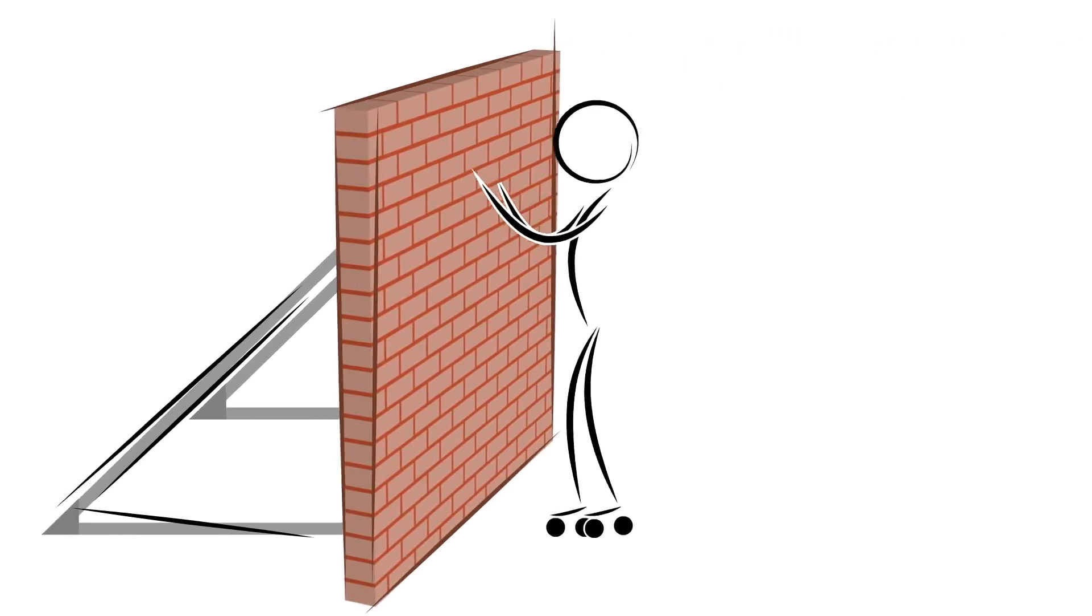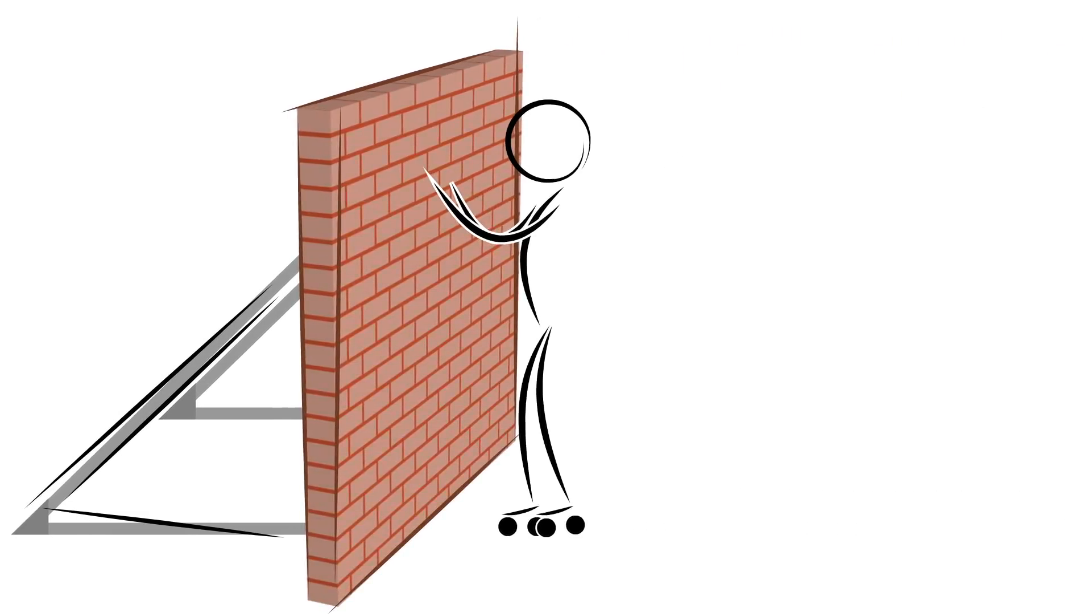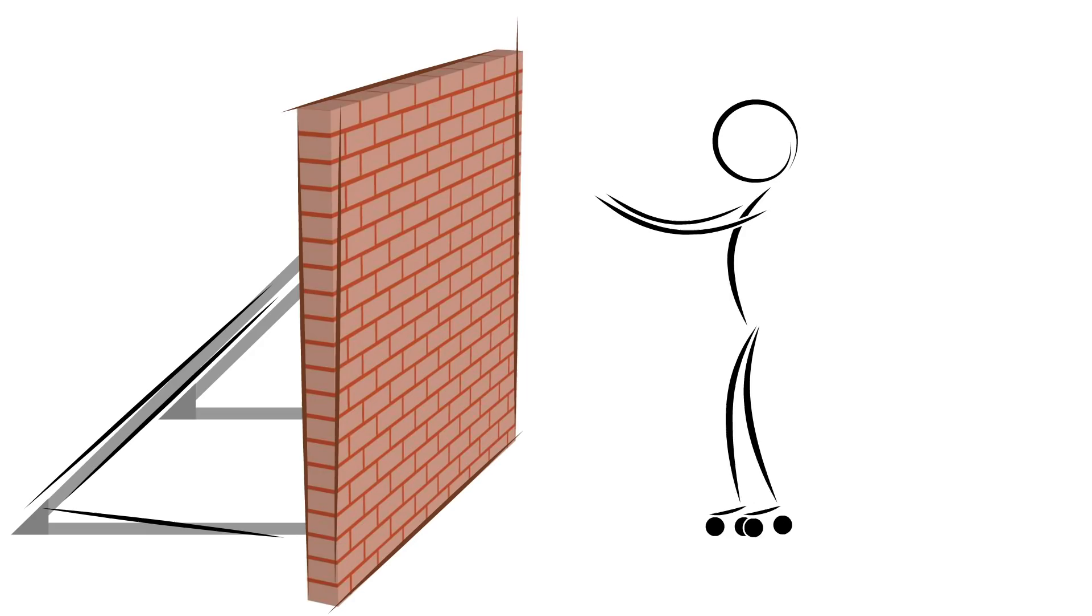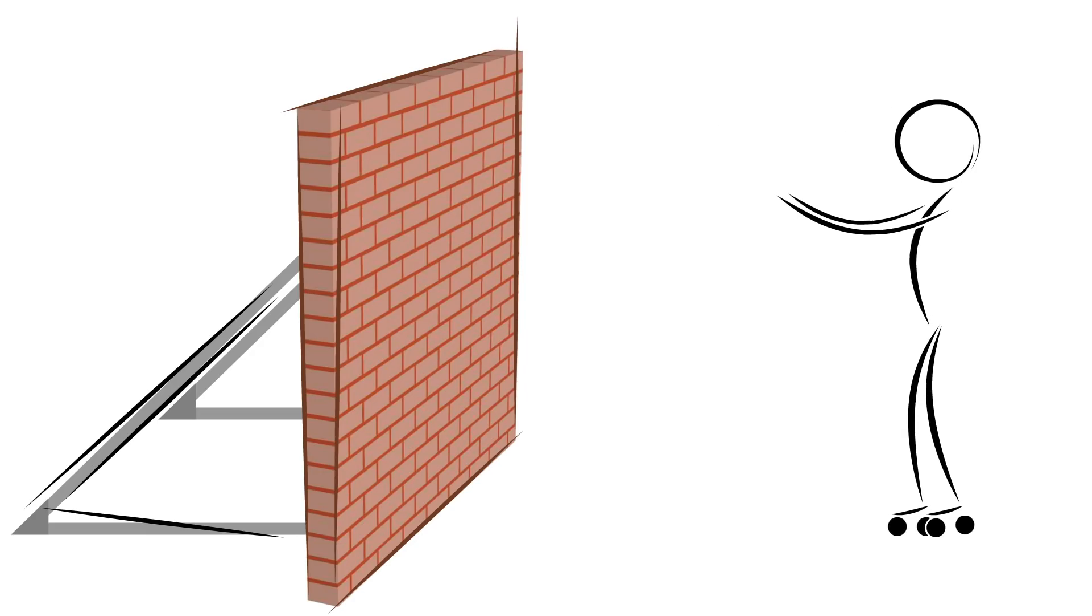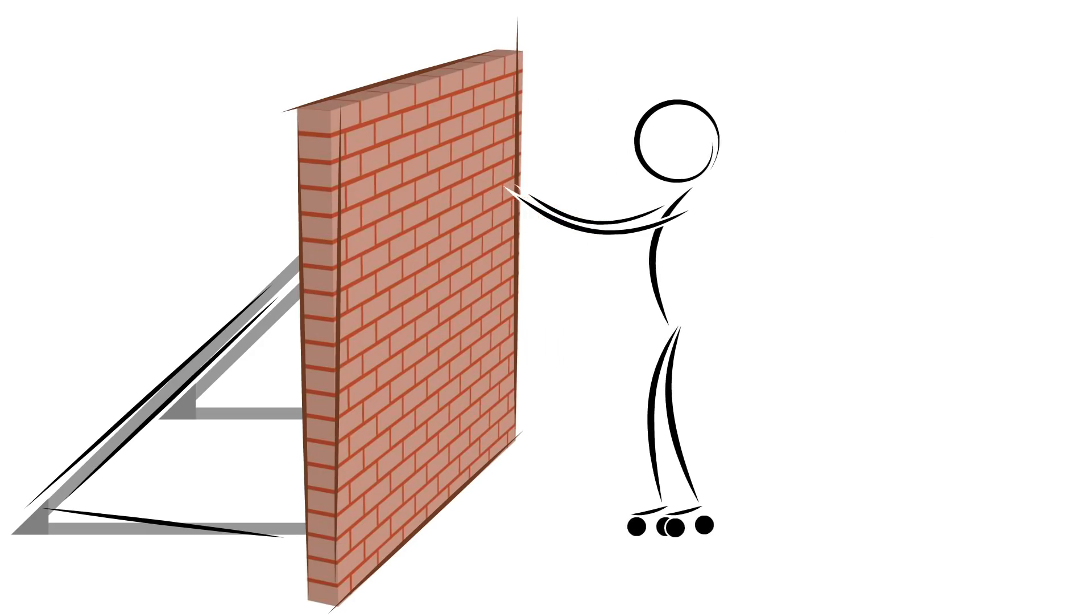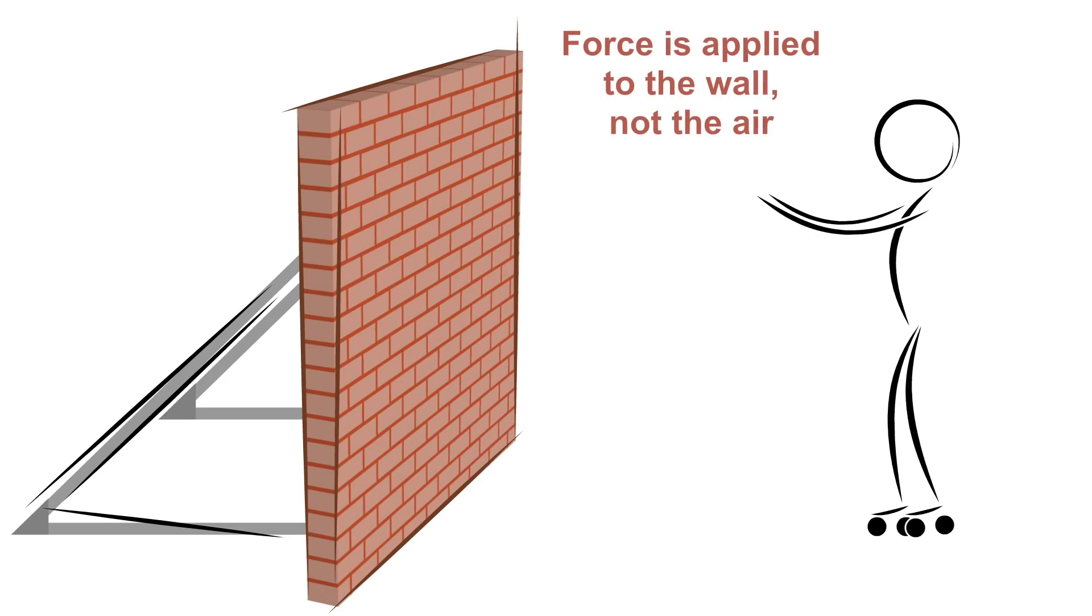Picture a person on roller skates facing a secured brick wall. If they push on the brick wall, they roll away from it. The force on the wall is causing the motion, not the air surrounding them.